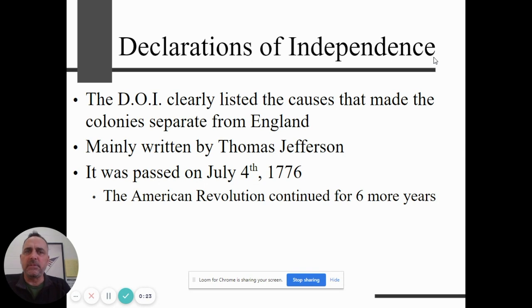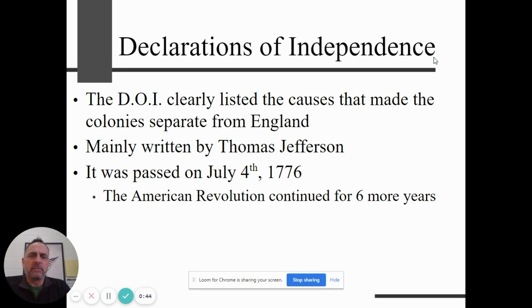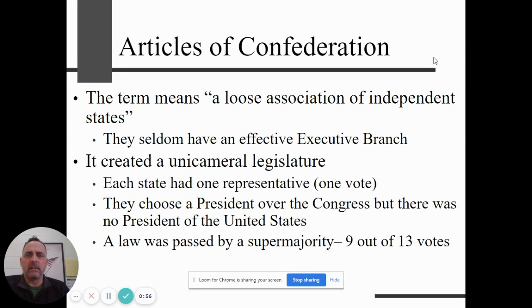Let's start off with the first one: the Declaration of Independence. This is us clearly listing the reasons why we're going to break away from England — basically declaring ourselves independent of it. Thomas Jefferson was the main author, and then a whole bunch of people signed it. It was officially passed on July 4th, 1776. We celebrate our Day of Independence on the 4th of July each year, even though the Revolution continued long after and had started before.